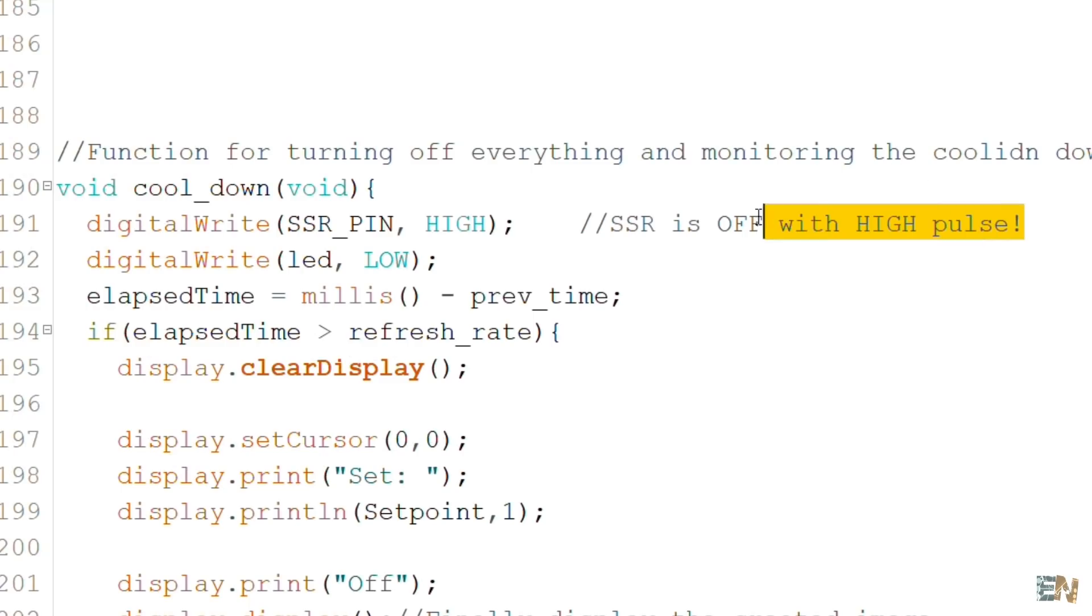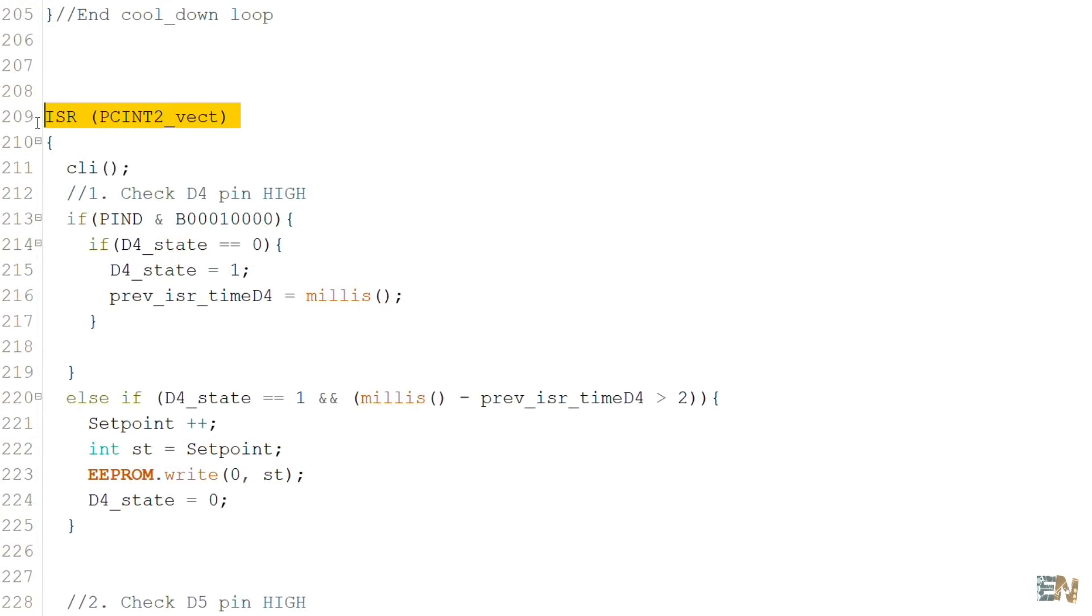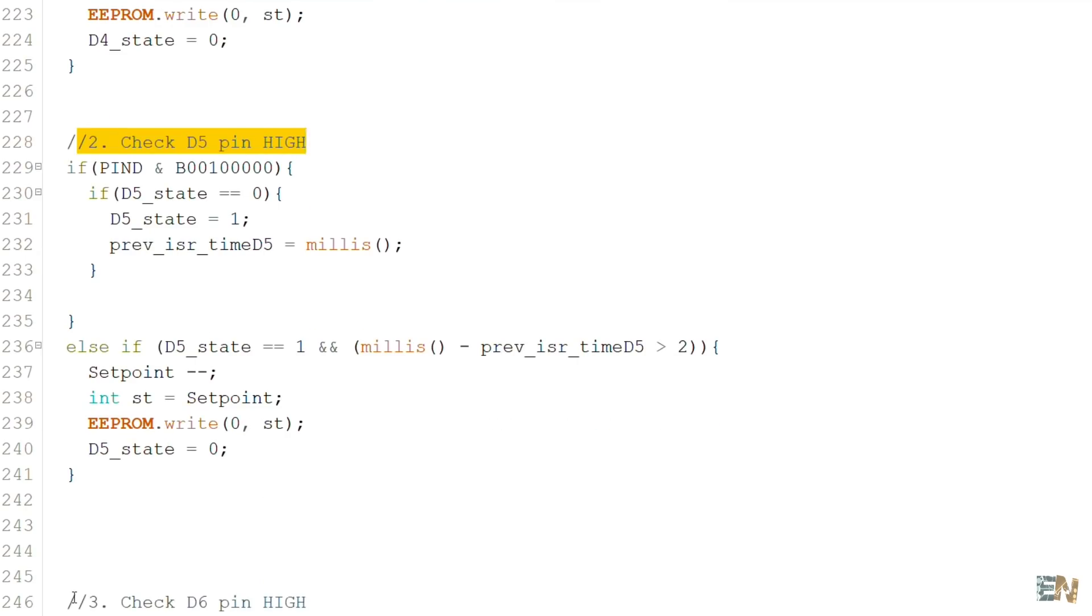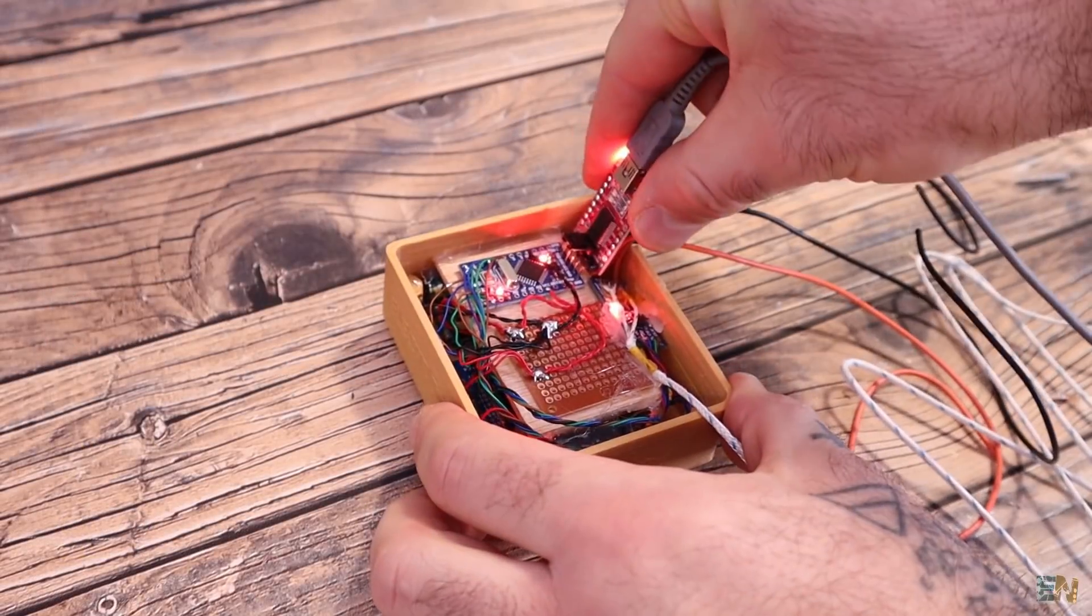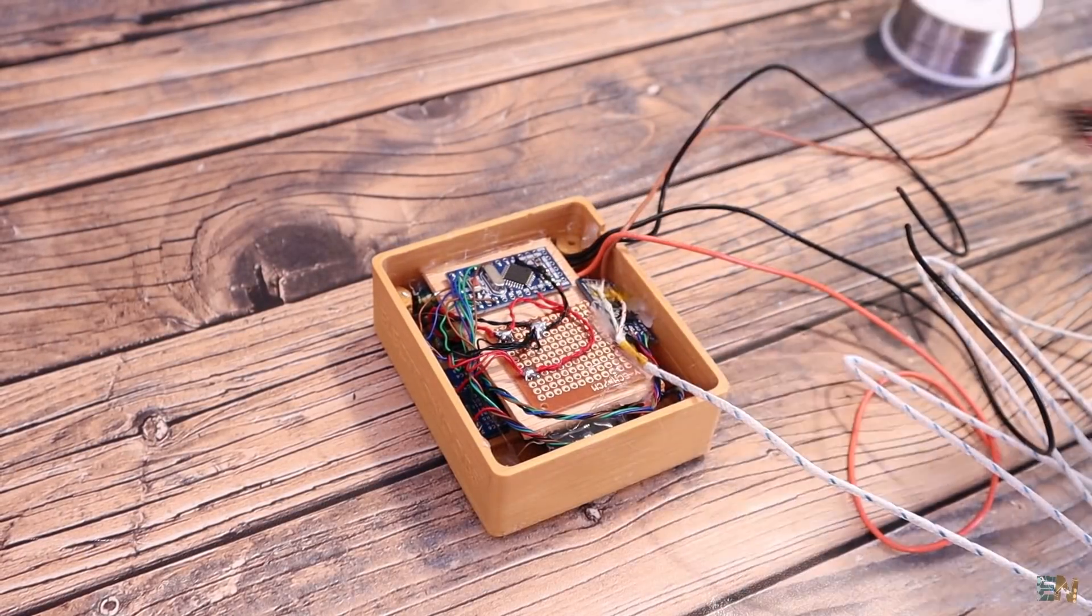In order to detect the three push buttons, I'm using interruptions and a debounce in order to make sure that we don't read noise. Read the code line by line for more. Now the controller is ready, I can close the case.